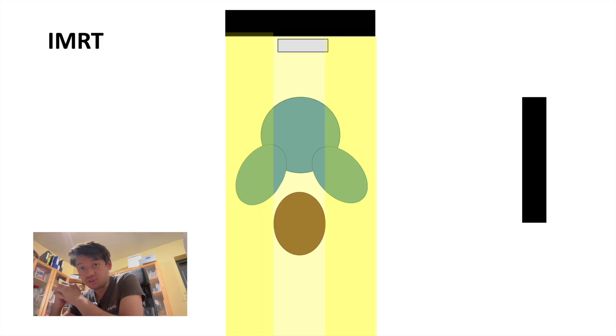This results in a non-uniform fluence because at certain areas, for example here near the edge, more photons are delivered, meaning more energy passes through.